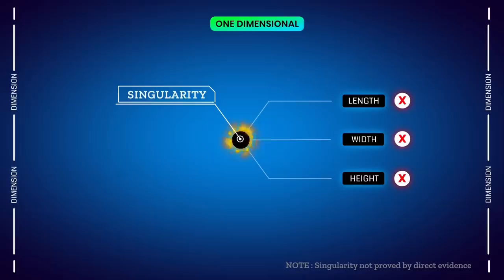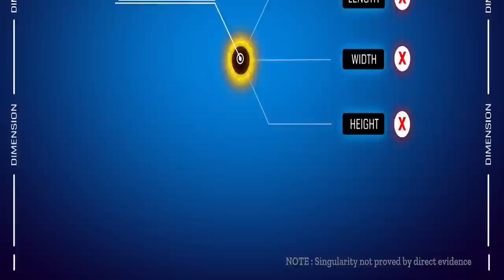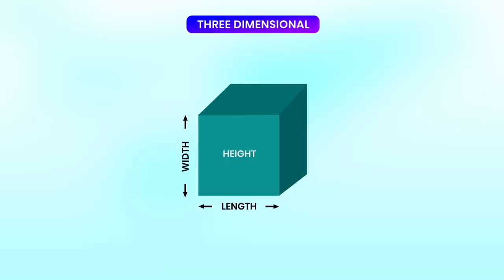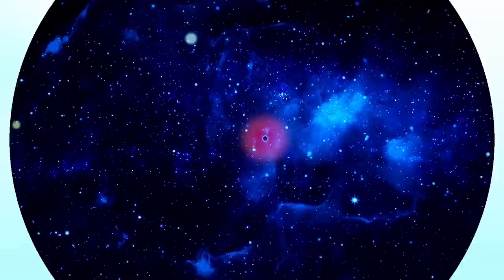We are living in a three-dimensional universe. A one-dimensional object doesn't have any length, width, or height. The best example is a singularity point, which has no measurable size or volume. Two-dimensional objects have length and width. Three-dimensional objects have length, width, and height, and can be seen in our everyday life — such as balls, humans, buildings, and well, everything.